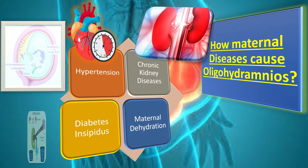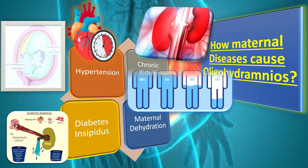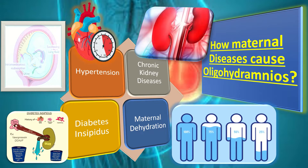What happens in diabetes insipidus? Diabetes insipidus causes oligohydramnios by maternal dehydration. This dehydration causes a marked effect on the maternal-fetal amniotic fluid dynamics by causing poor perfusion of water and solutes through the amnion and chorion, and thus the fetus has diminished urine output, possibly contributing to the development of oligohydramnios.